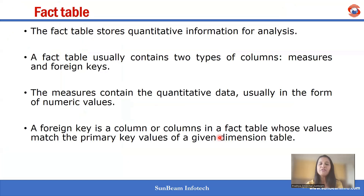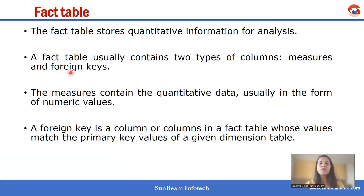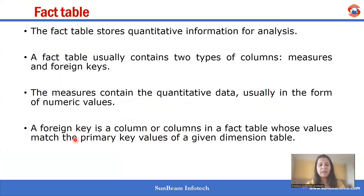A fact table stores quantitative information for analysis purposes. It usually contains two types of columns: the first is a measure, which contains quantitative data usually in the form of numerical data, and the second is a foreign key — a column whose value matches the primary key value of a given dimension table.